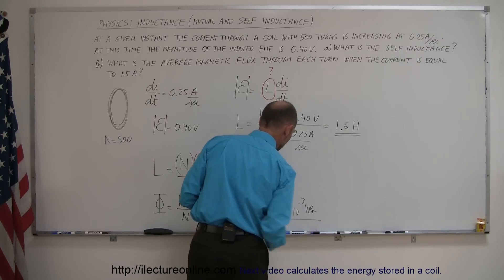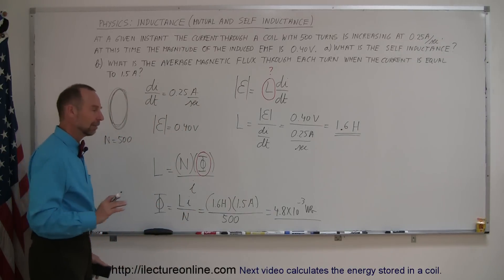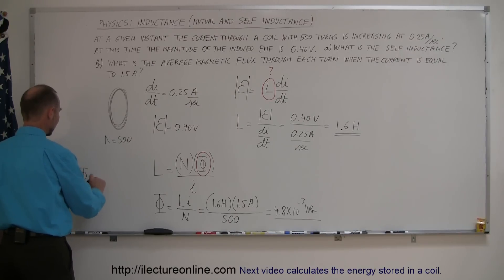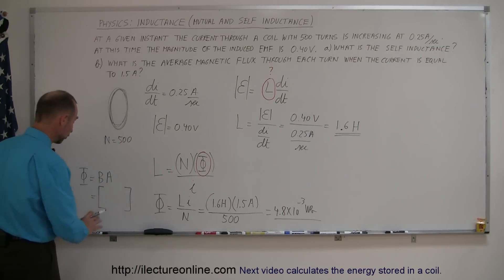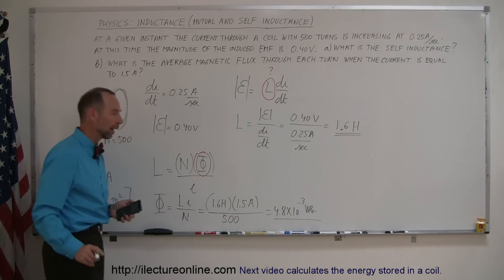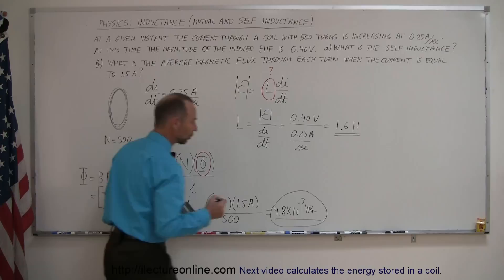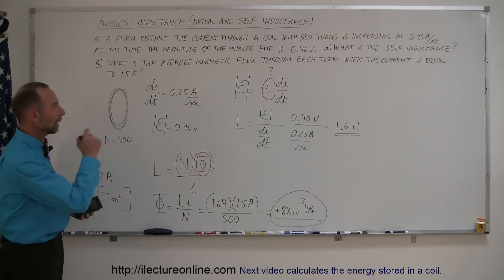Webers is a unit of flux. And if you wonder where the unit came from, we know that the flux can be defined as the product of the magnetic field times the cross-sectional area. The units for magnetic field is Tesla's. And the unit for area is square meters. So, it turns out that Tesla times square meters is indeed Webers. And that's what we write. So, that's the flux going through the loop, the average flux per coil. And the self-inductance is 1.6 Henrys. And that's how you do a problem like this.